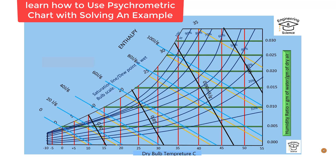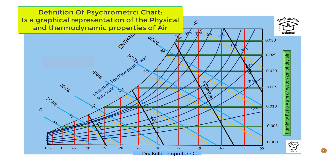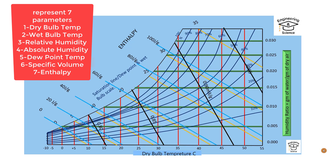Hello friends, today I want to show you how we can use the psychrometric chart. First we have to know what is the psychrometric chart. The psychrometric chart is a graphical representation of the physical and thermodynamic properties of air. It includes dry bulb temperature, wet bulb temperature, relative humidity, absolute humidity, dew point temperature, specific volume, and enthalpy.